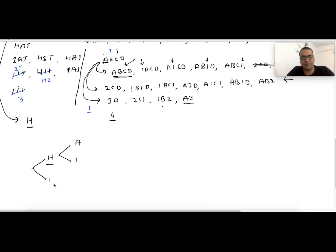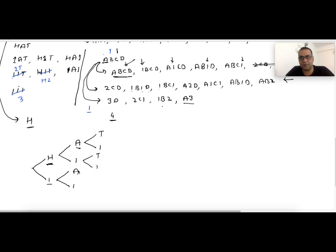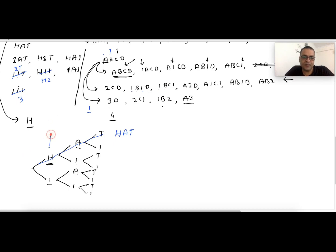When we fix H at the first position, at the second position we can fix A or one. Similarly, when we have one at the first position, at the second position we also have two possibilities: A and one. For all arrangements of first and second positions, we again have two possibilities at the third position. We want to print all root-to-leaf paths in this tree — this is a function-call tree, at index 0, index 1, and index 2.